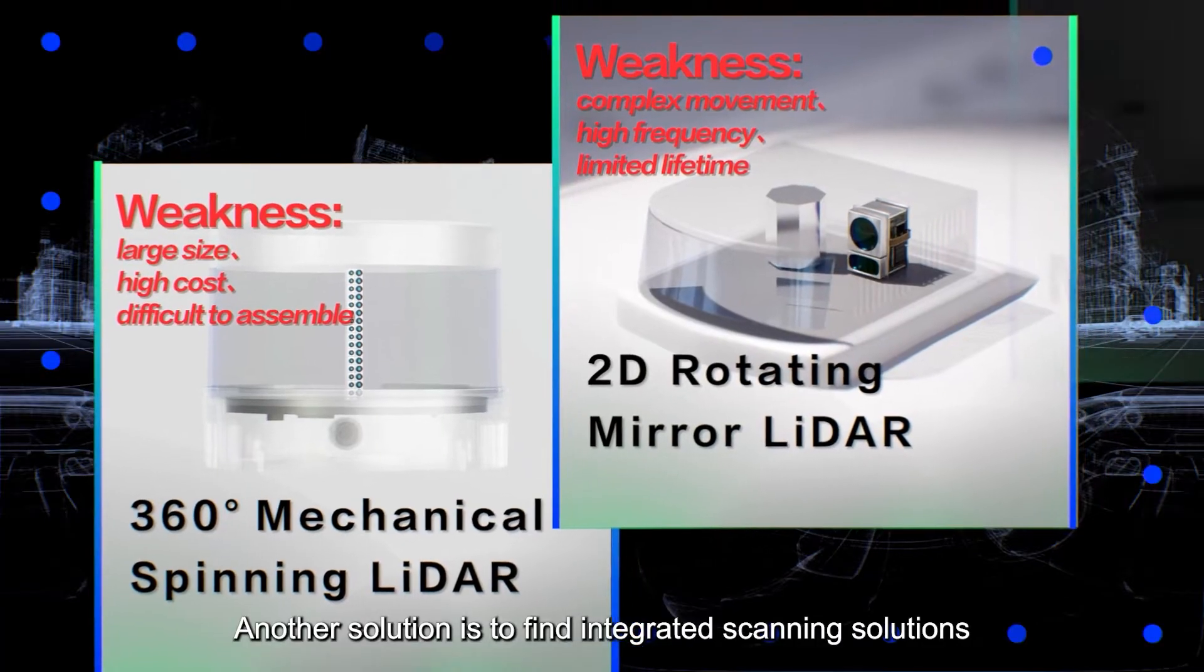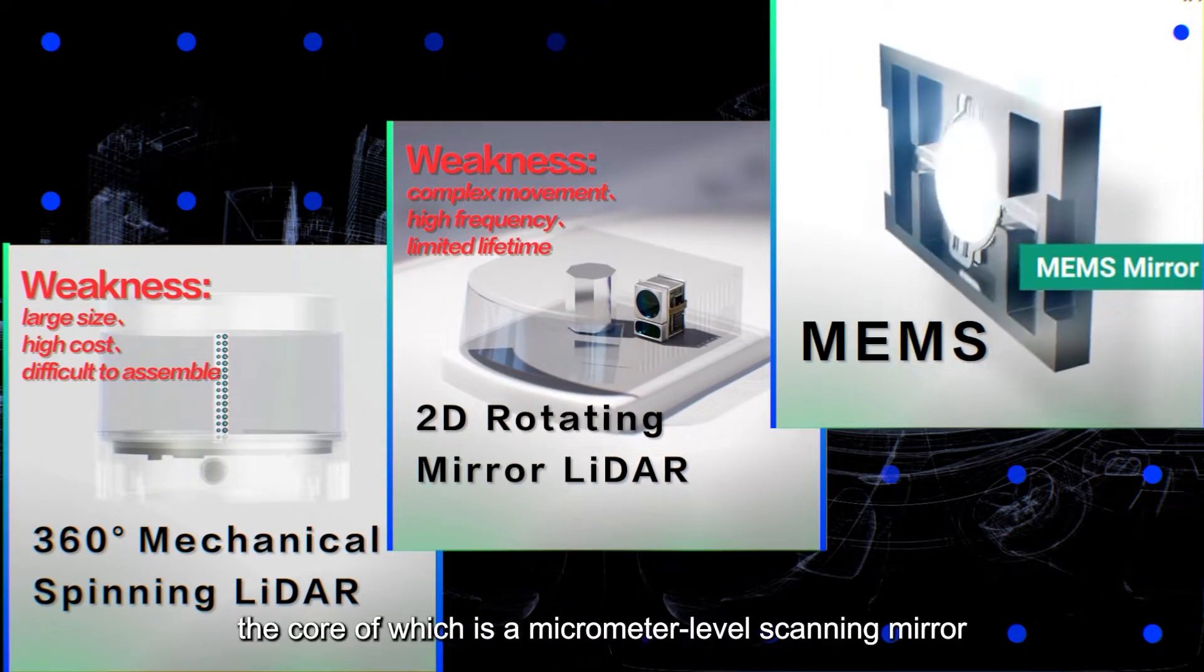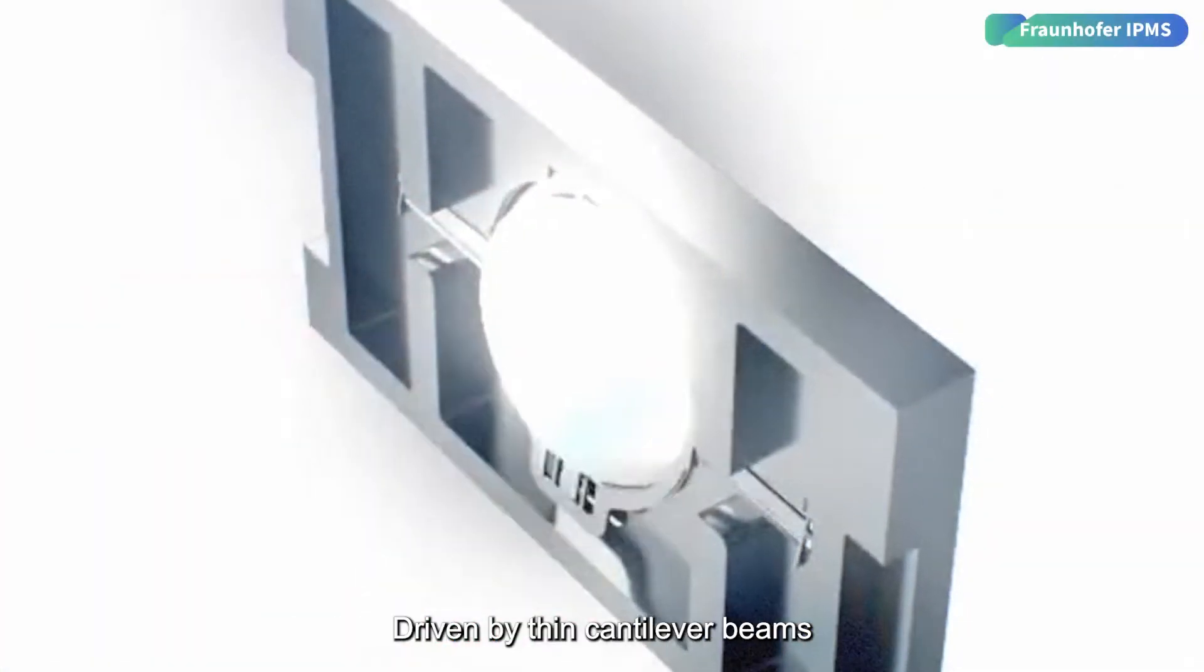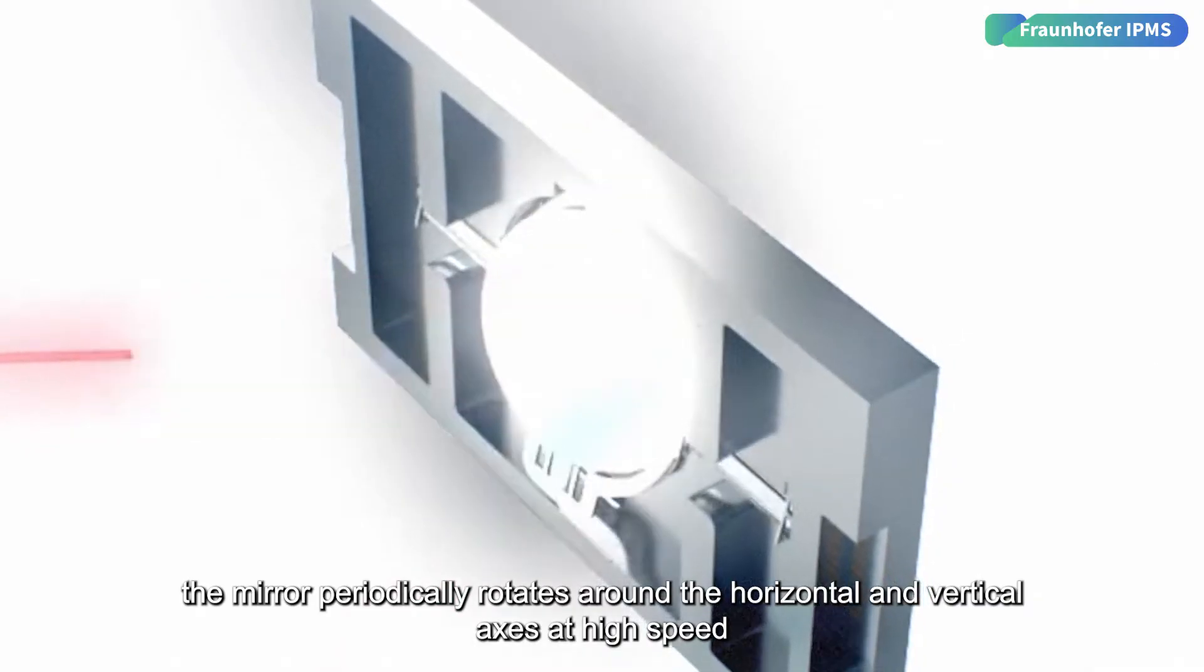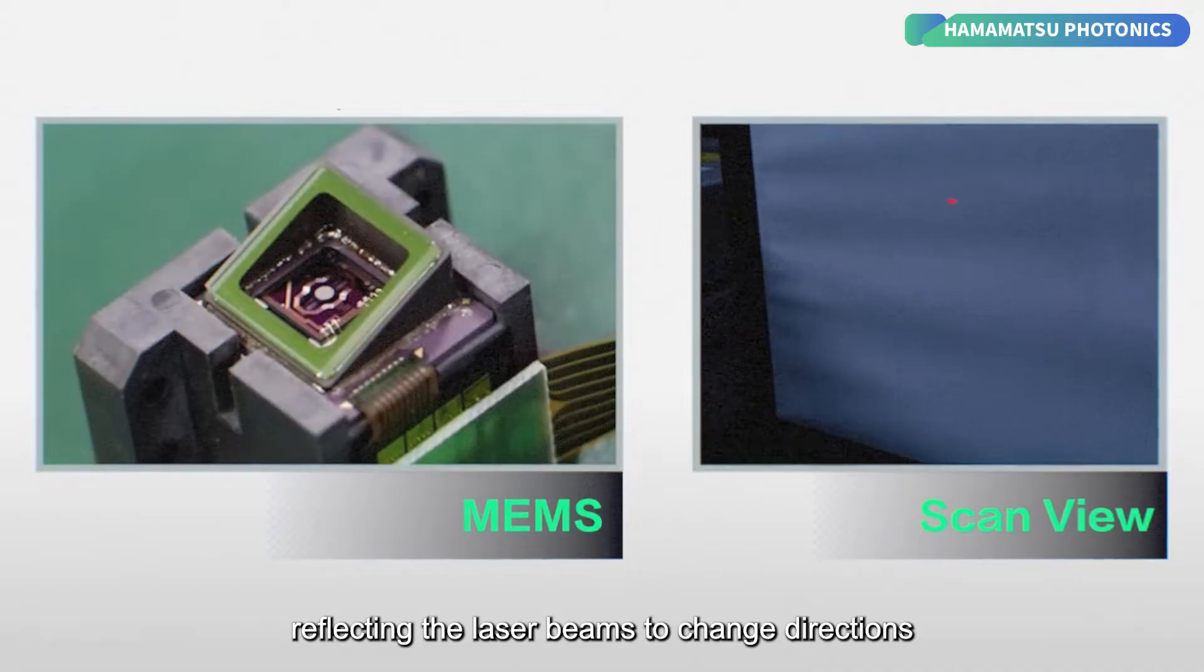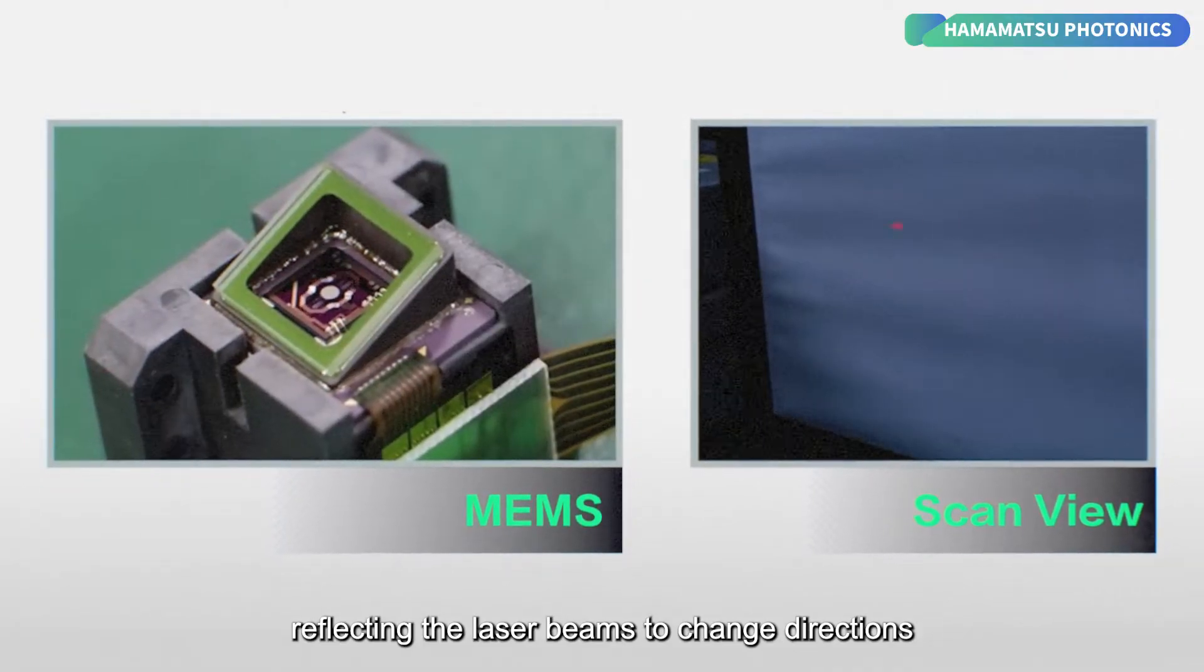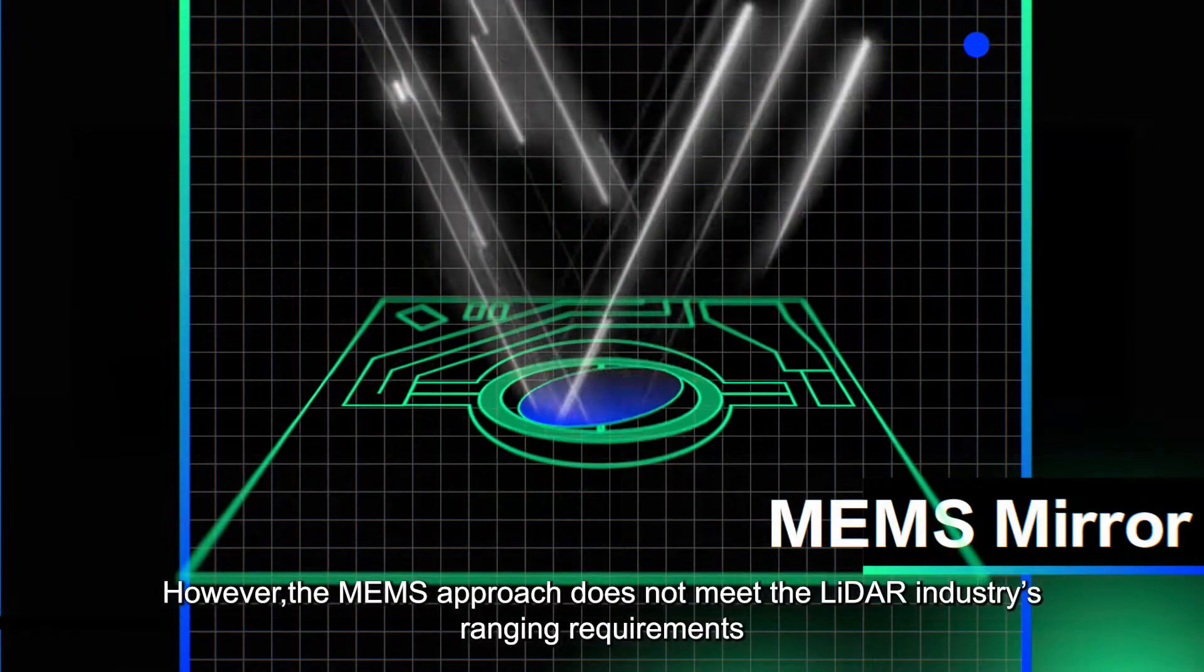Another solution is to find integrated scanning solutions, such as MEMS modules, the core of which is a micrometer-level scanning mirror. Driven by thin cantilever beams, the mirror periodically rotates around the horizontal and vertical axis at high speed, reflecting the laser beams to change direction. However, the MEMS approach does not meet the LiDAR industry's ranging requirements.